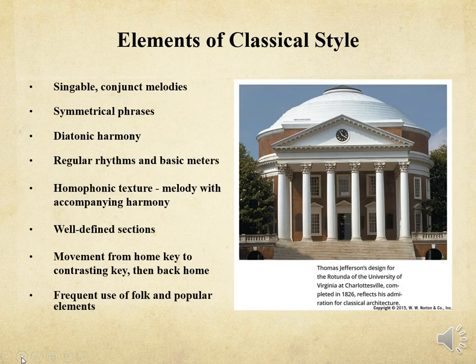The elements of classical style reflect the Enlightenment ideas of order and clarity. Elegant lyrical melodies characterize the classical style. Even the instrumental melodies of this era are memorable and easy to sing. Classical melodies are often constructed in symmetrical four-bar phrases with clear cadences or resting points, and tend to move stepwise or by small leaps within a narrow range. The harmonies are diatonic, built from the seven tones of the major or minor scales. The melody is often set gracefully in a homophonic texture — a melody with an accompanied harmony. Rhythm also helps reinforce symmetry and balance, and typically meters are basic and steady.